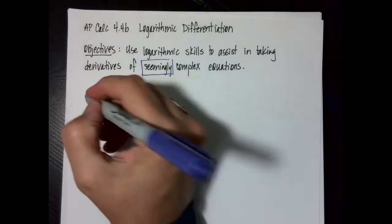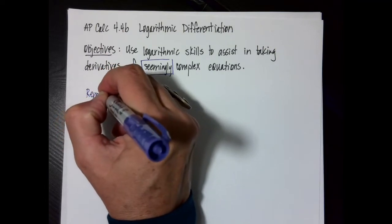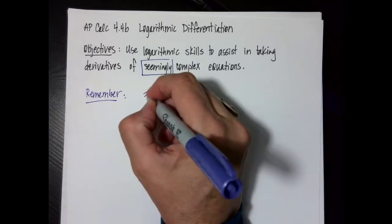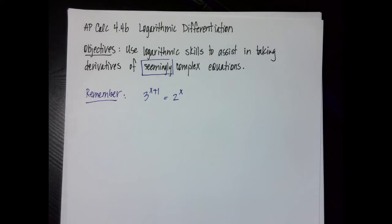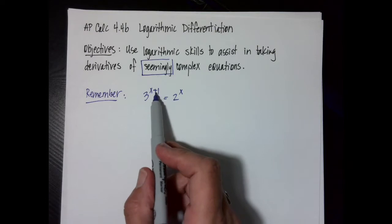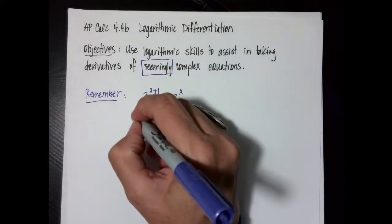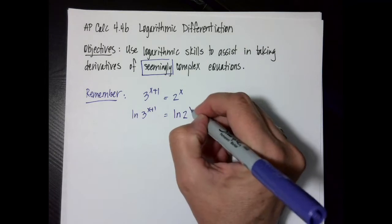Let's go back and do some work with logarithms before we get started. So this is just a reminder. If you'll notice in this equation, I have an exponential situation going on. The problem is the bases are not the same. So because the bases aren't the same, I can't solve the little baby equation at the top. But what I can do is take the log of both sides — natural log of 2 to the x.